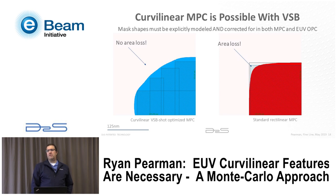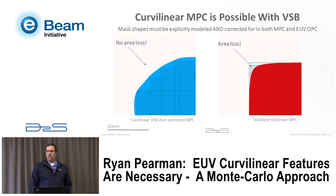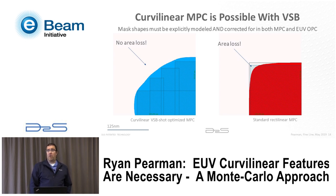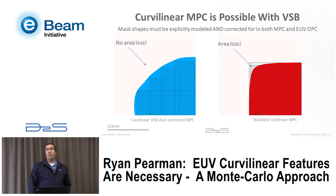For EUV, this becomes important because if I go to Manhattanization, I can still do it in one shot, but now there's a corner rounding problem. Quite unlike the case with curvilinear features — where I can print the target I want — if I'm trying to print a rectilinear feature I'm always going to have area loss. Area loss causes print biases, and it may be the case that for EUV MPC you'd actually prefer curvilinear features because they won't have a DC area offset component.